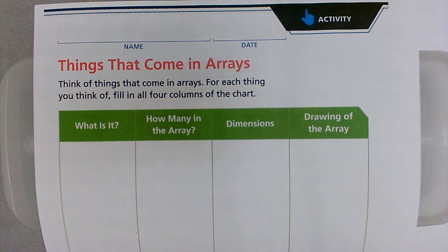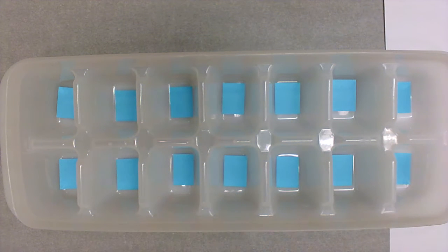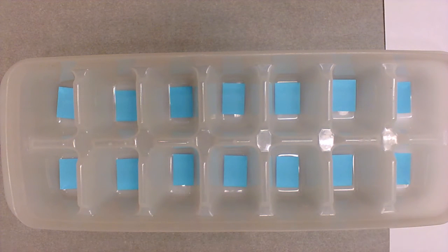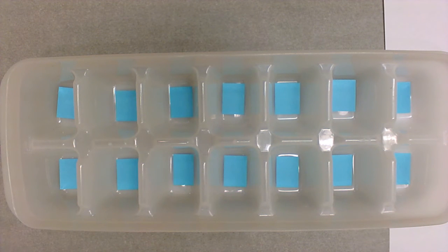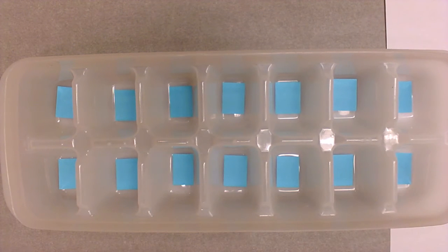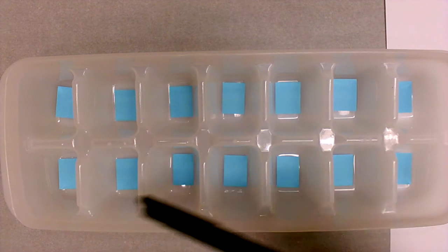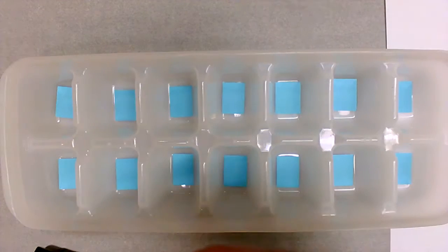We're going to take a look at some simple household things. The first thing we're going to look at is an ice cube tray. The first thing we want to find out is: what is it? It's an ice cube tray. The second thing we want to find out is: how many in the array? Remember, arrays are composed of rows and columns.